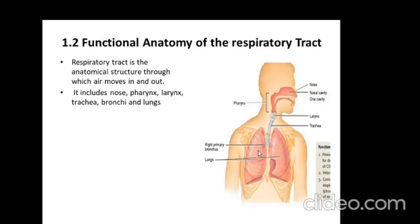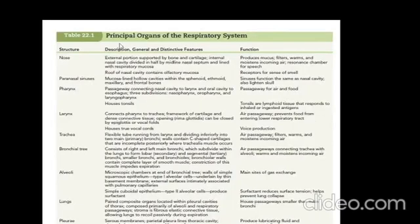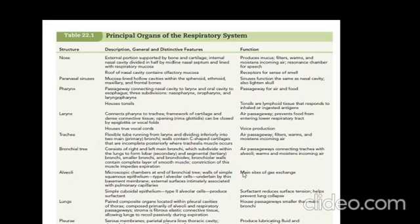There is a table from Tortora that summarizes the principal organs of the respiratory system and their functions, starting from the nose all the way to the alveoli, the lungs, and the pleura. For example, the alveoli are the main site of gas exchange, and the pharynx is a passageway of air and food. These are some of the important structures of the respiratory system.